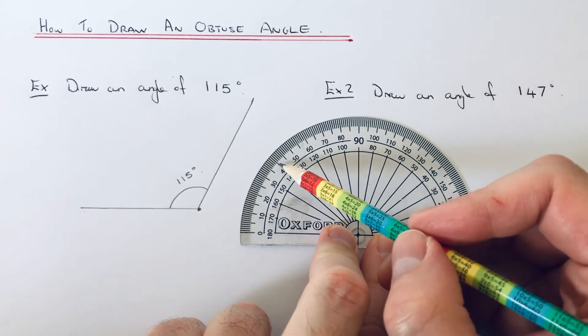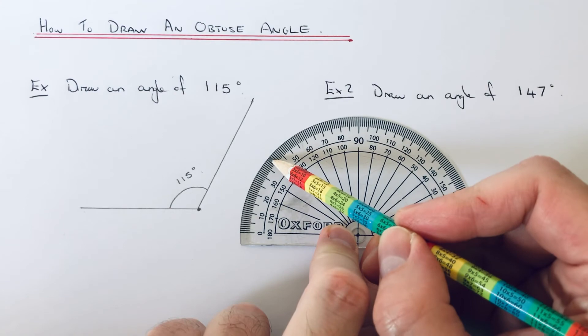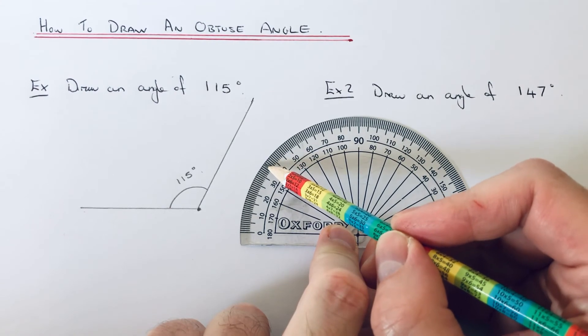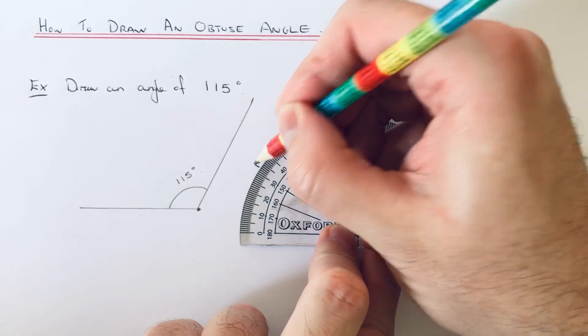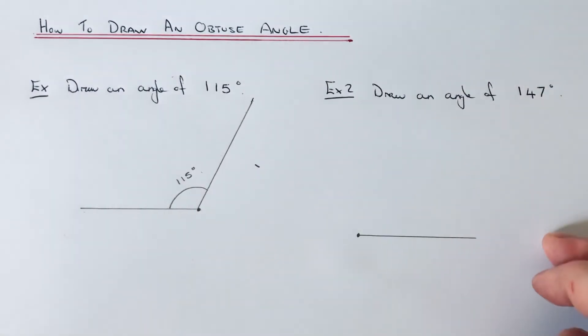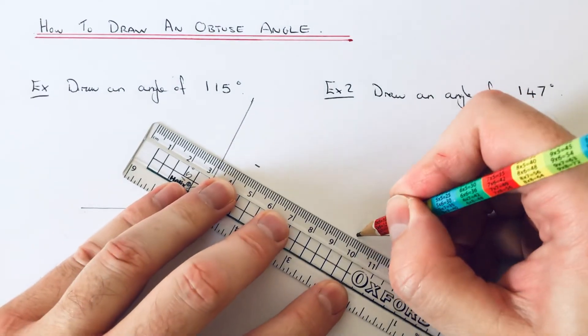So we can count these on the outside now. So 1, 2, 3, 4, 5, 6, 7. So 147 is there. And then join it back to the left side of the line and mark the angle in. So it's 147 degrees.